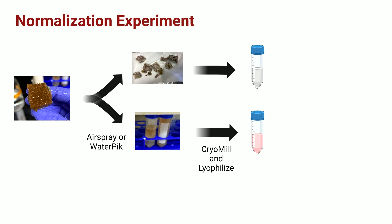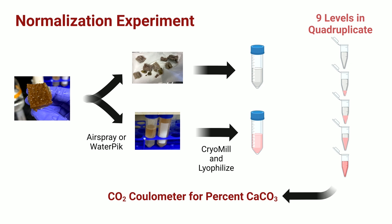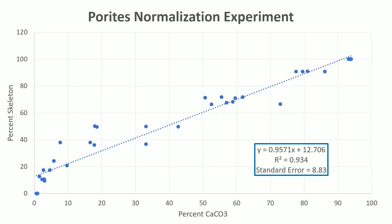To address this, I took coral fragments and separated them using a water pick into the skeleton and the tissue. Then I made dry powders of each of these substances and combined them in nine levels to create corals in vials that had varying skeleton-to-tissue ratios. I then ran these on a CO2 kilometer and looked at the percent calcium carbonate in each of these samples. We found that this method gave us a fairly tight linear relationship — as you can see in this graph, how much skeleton we put in the vial correlated with the percent calcium carbonate reading we got back, with an r-squared close to 1 and a low standard error.